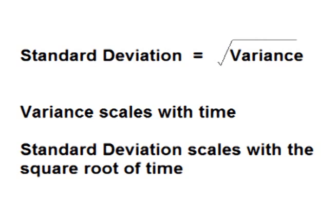To scale the variance, multiply by the number of trading days. For the annualized variance, multiply the daily variance by the number of trading days in a year. To scale the volatility, also known as the standard deviation, multiply by the square root of the number of trading days. For the annualized volatility, also known as the annualized standard deviation, multiply the daily standard deviation by the square root of the number of trading days in a year.